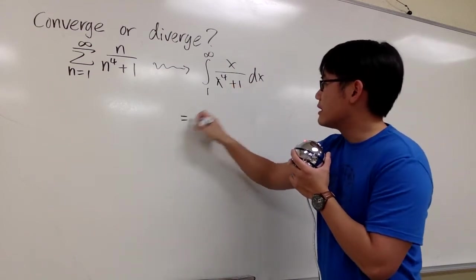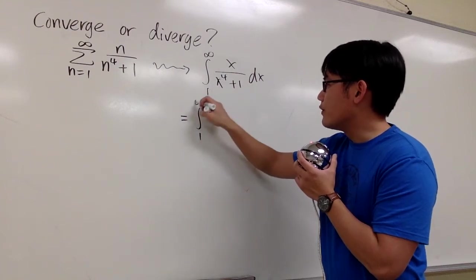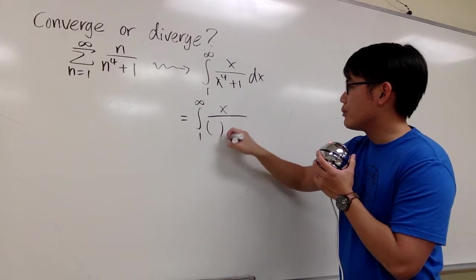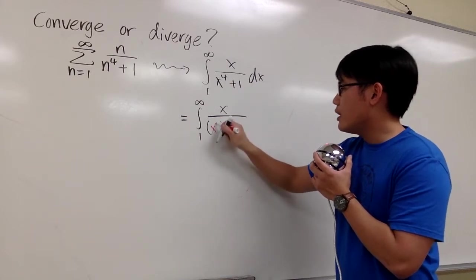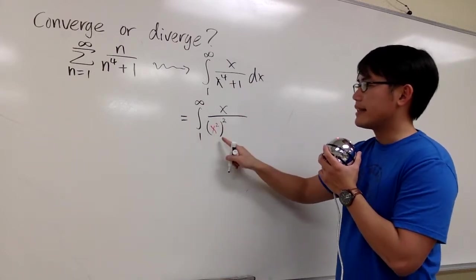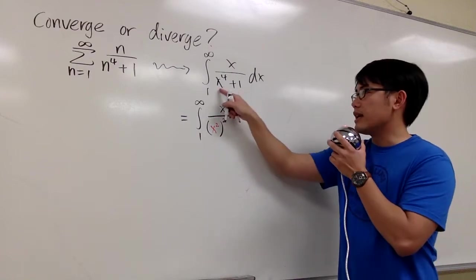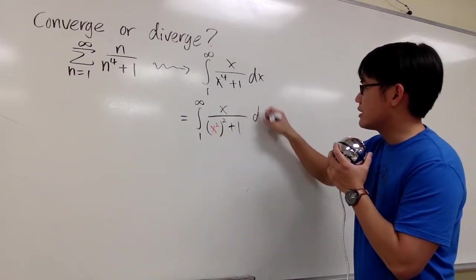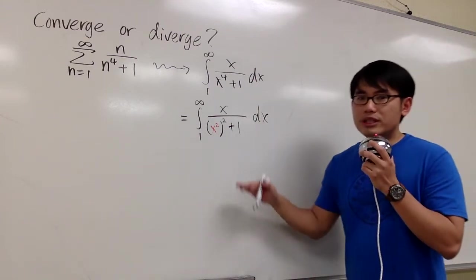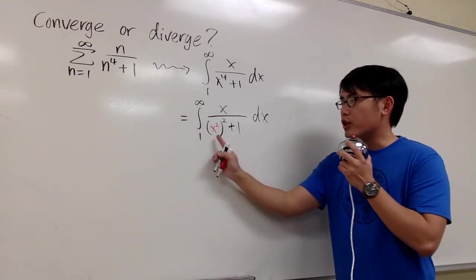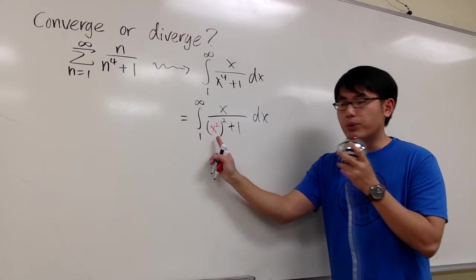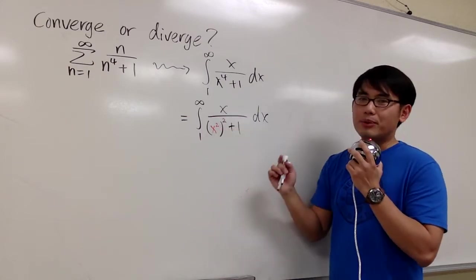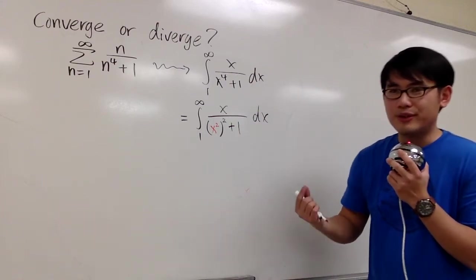I will put this down as the integral from 1 to infinity of x over — in parentheses — x squared, and then squared, which is still the same as x to the fourth power, plus 1, dx. The reason for us to do this is so that we can use a u-substitution: let u be x squared, and then we happen to have an x on the top already, so we can cancel things out very nicely.